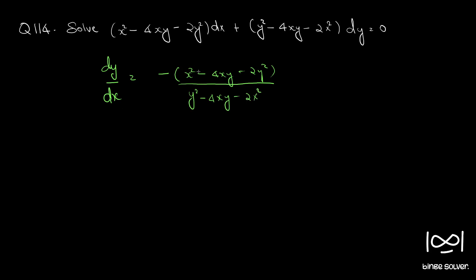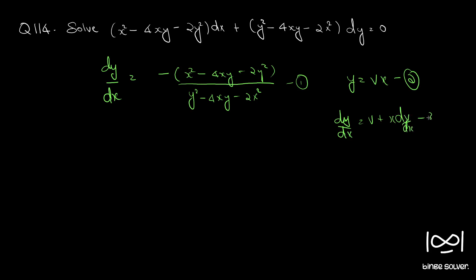If you divide numerator and denominator by x², you can see that dy/dx is a function of y/x, and it is a homogeneous equation. For such questions we put y = vx as the substitution. Differentiating with respect to x we get dy/dx = v + x·dv/dx. This is equation 3.